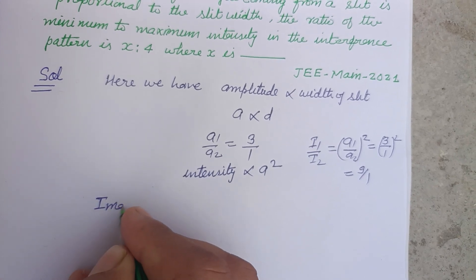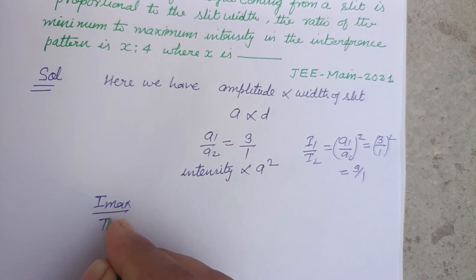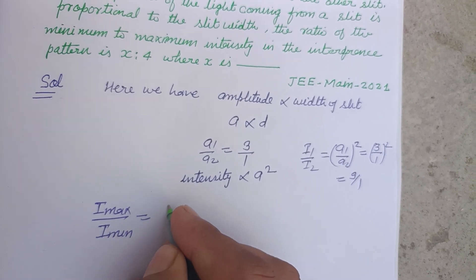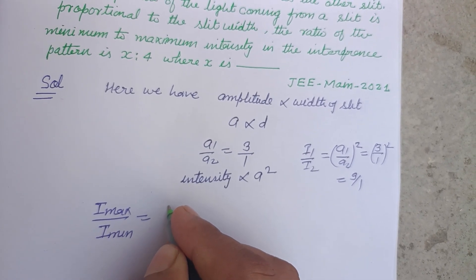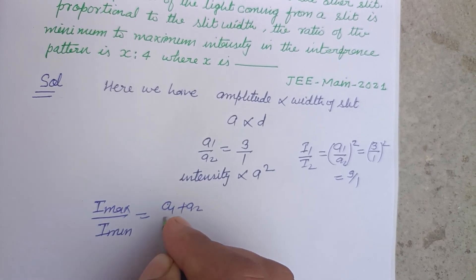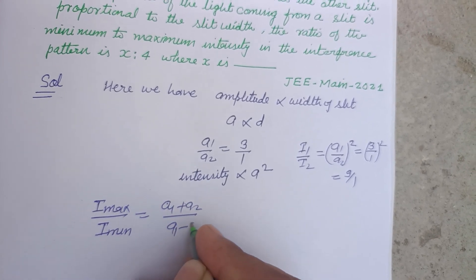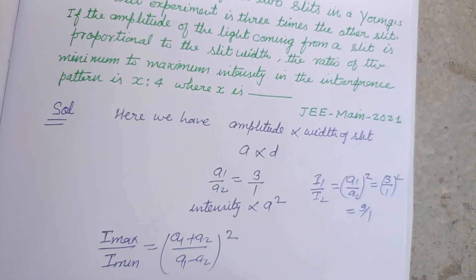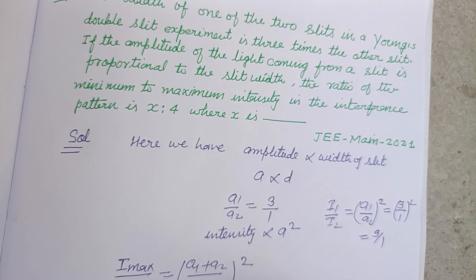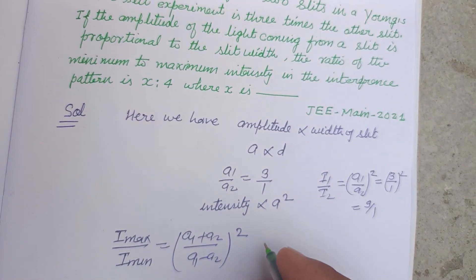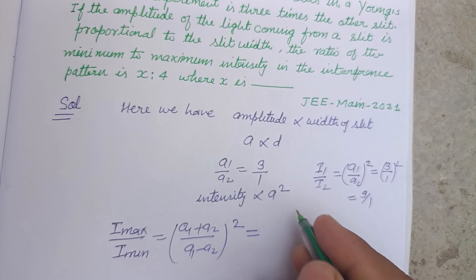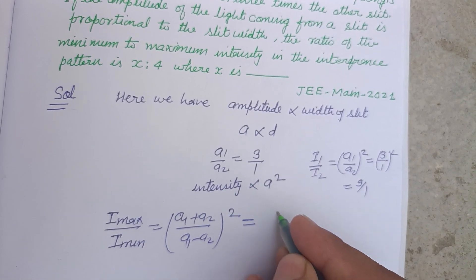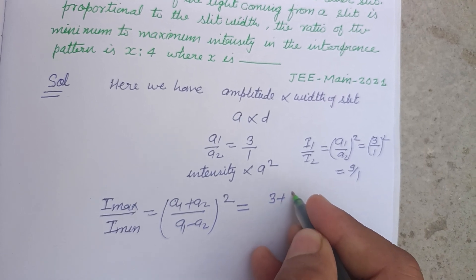Now, Imax upon Imin equals A1 plus A2 over A1 minus A2 whole square. A1 is 3 and A2 is 1.